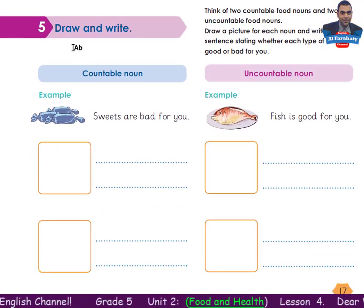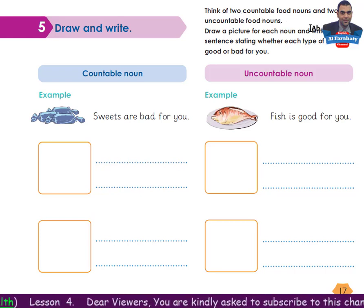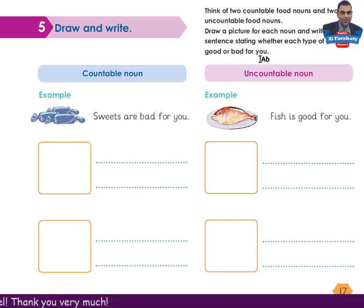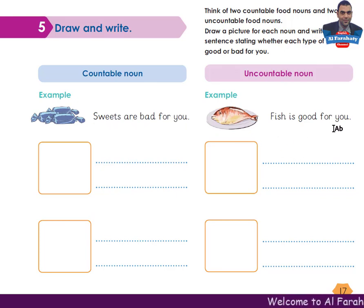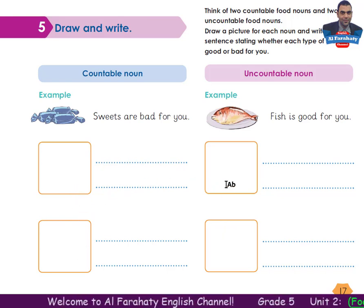Activity 5, Draw and Write. Think of two countable food nouns and two uncountable food nouns. Draw a picture for each noun and write a sentence stating whether each type of food is good or bad for you. Here are the examples — for countable nouns: Sweets are bad for you. For uncountable nouns: Fish is good for you.